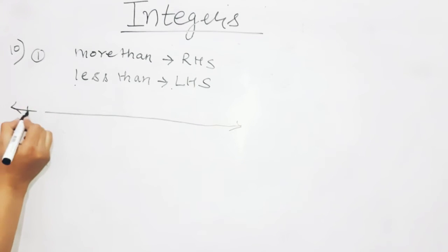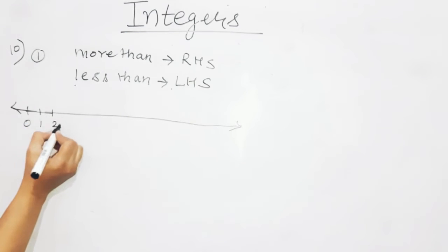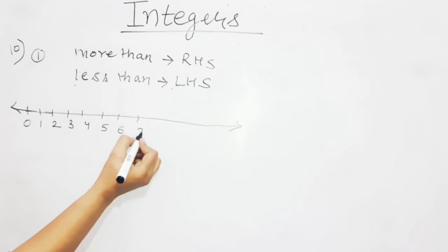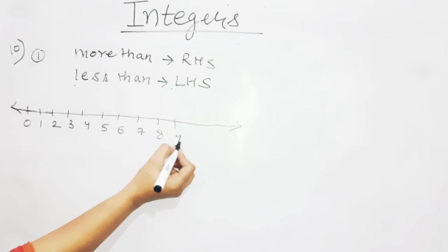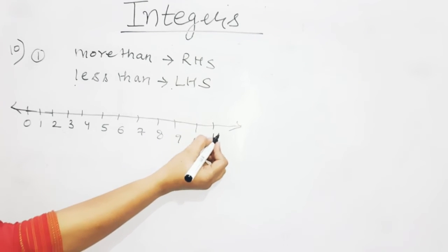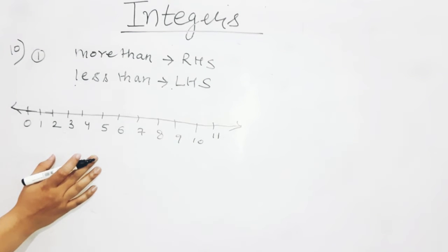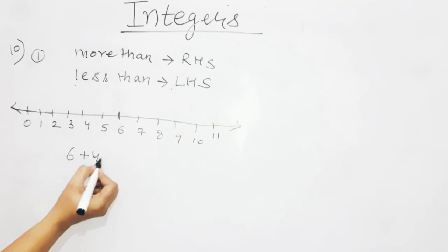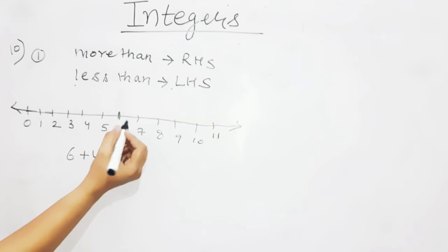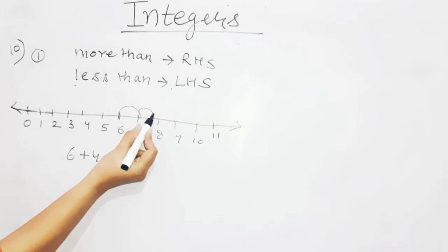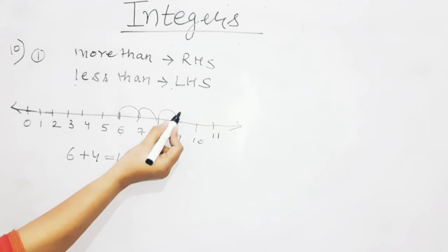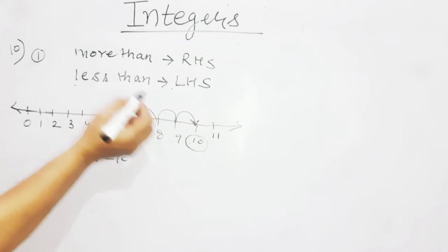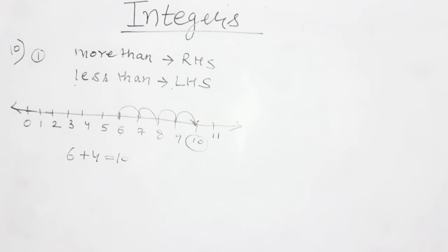On the number line: 0, 1, 2, 3, 4, 5, 6, 7, 8, 9, 10, 11. Starting at 6, we jump 4 steps to the right. So 4 more than 6 equals 10. This is how you represent it in your maths classwork copy.